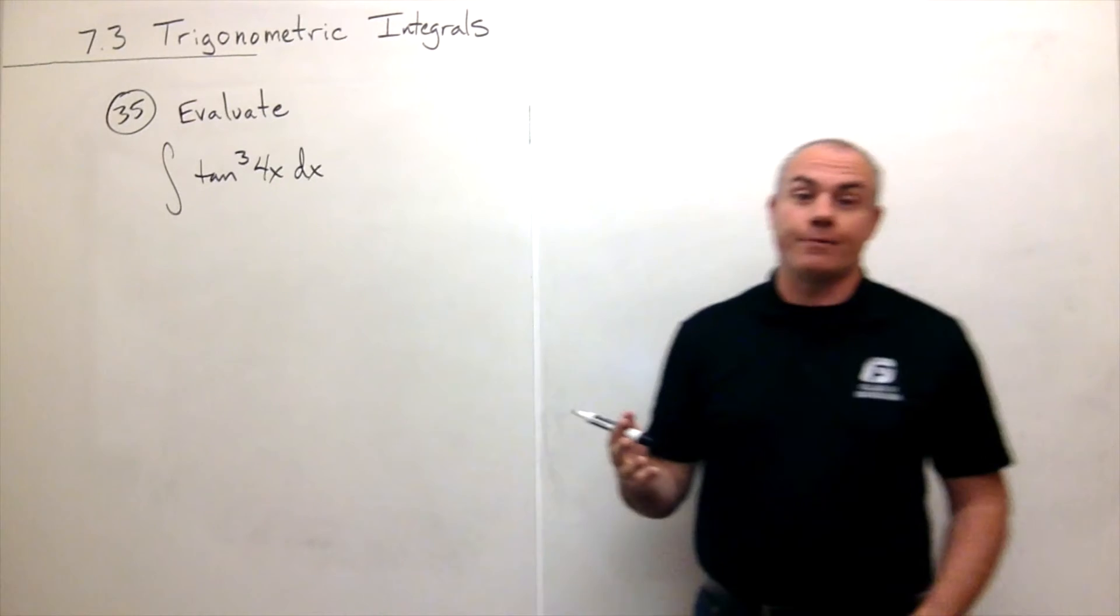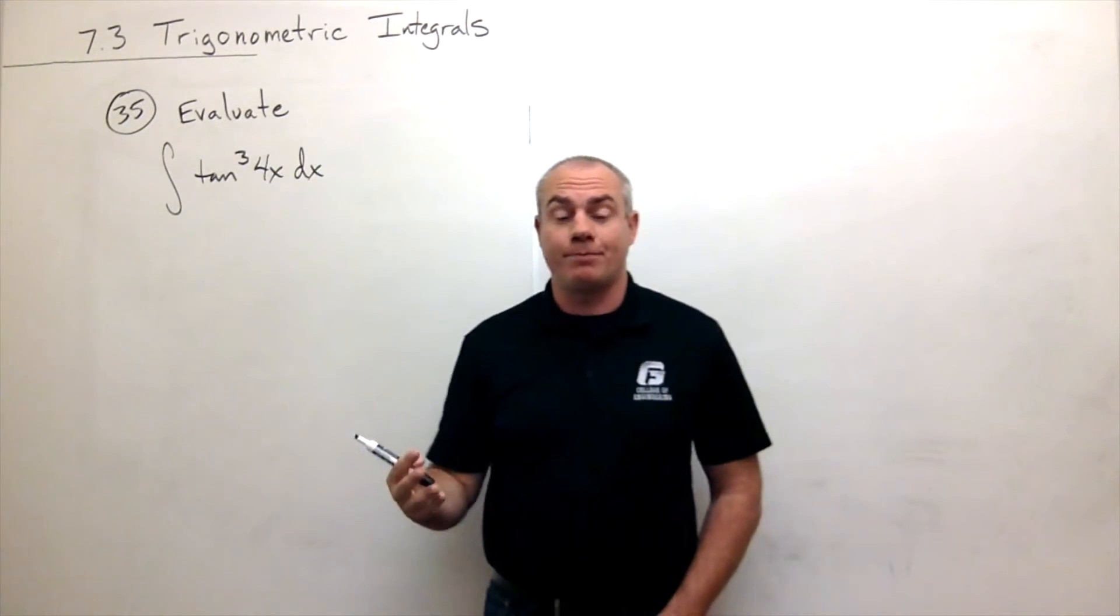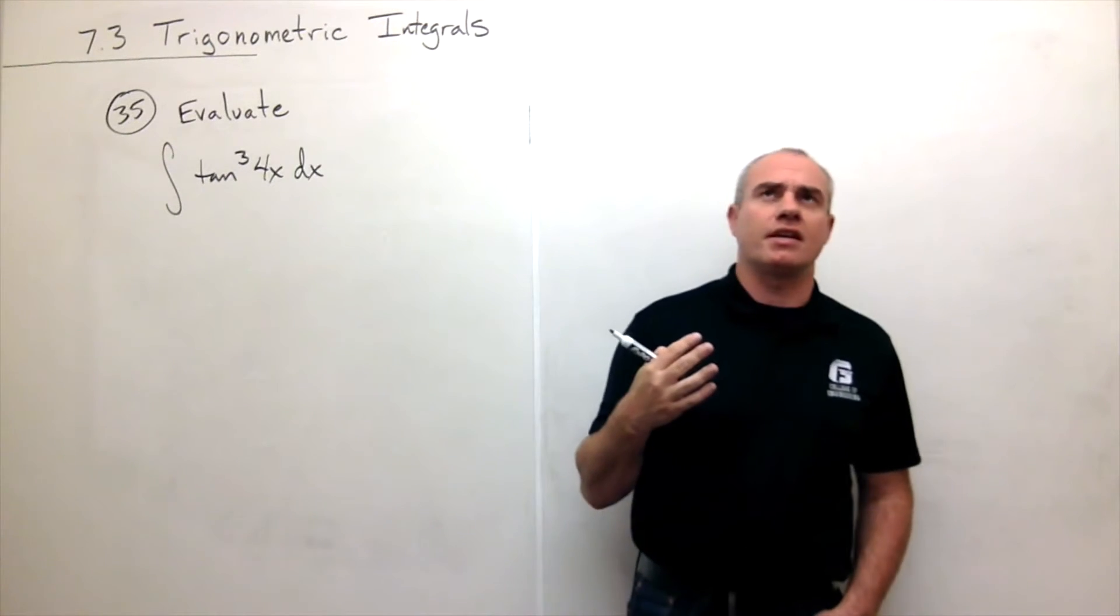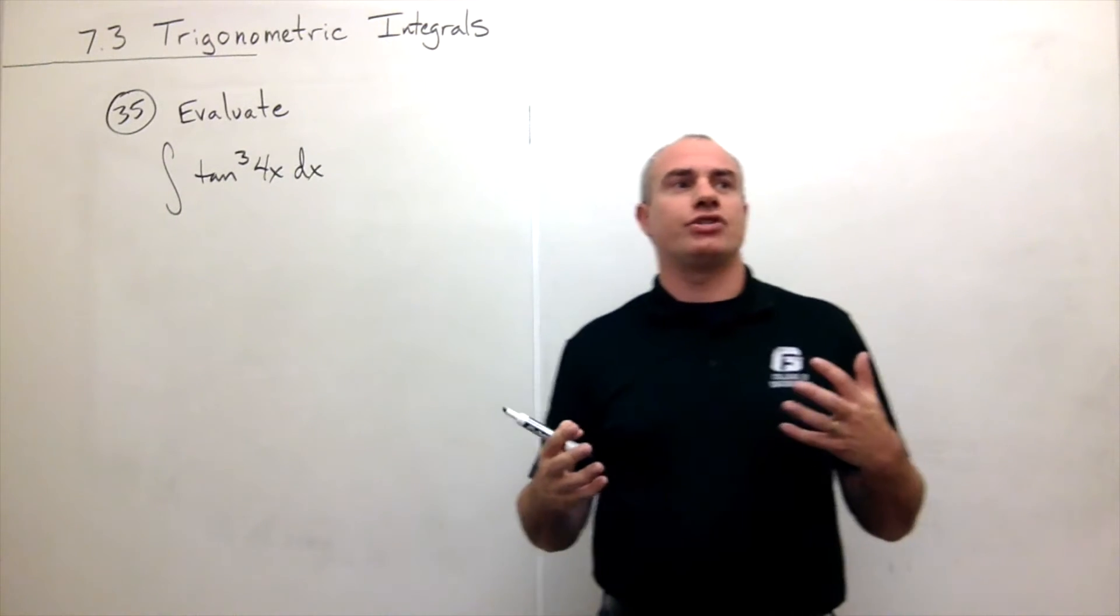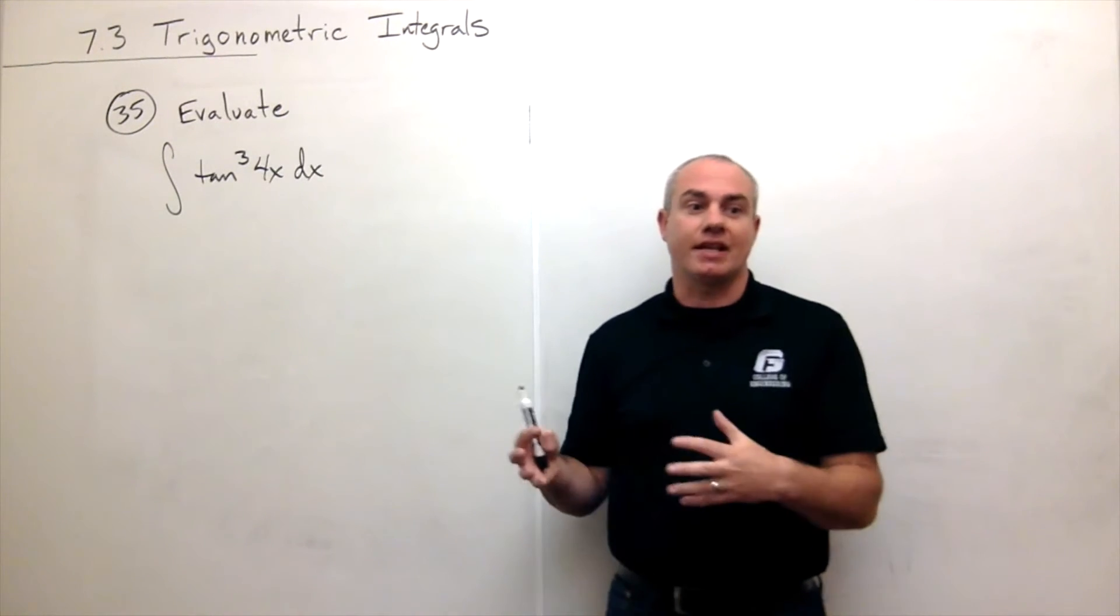So as in other problems when we see that we've got some tangents floating around, we've got options. We could see, what if I wrote tangent as sines and cosines? What if I wrote a few of the tangents as secants?